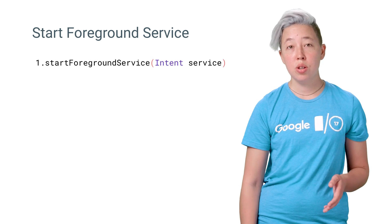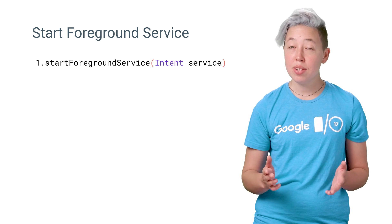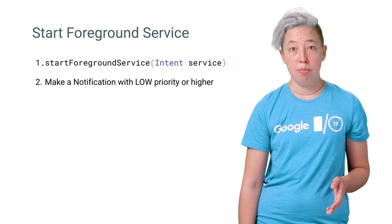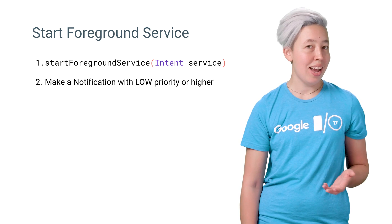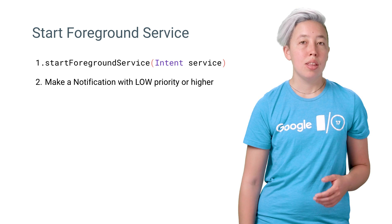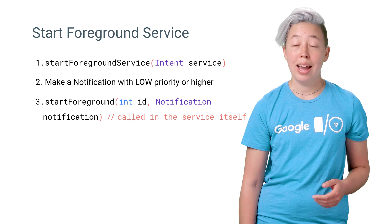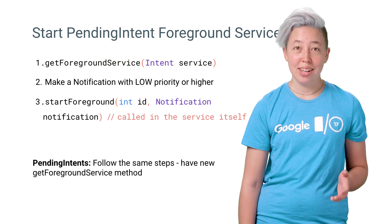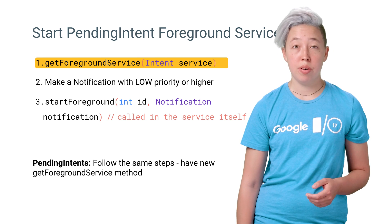The steps are: first, use the new StartForegroundService method. This creates a background service that you must immediately promote to the foreground. Within the service, make a notification. Your foreground service notification should always be of low importance or higher so that it's actually visible to the user — it should not be of minimum importance. The final step is to have the service promote itself to the foreground using StartForeground and the notification that you just made. If you need a pending intent to start a foreground service, you can use PendingIntent's new GetForegroundService method and then follow the same steps to promote it to a foreground service.